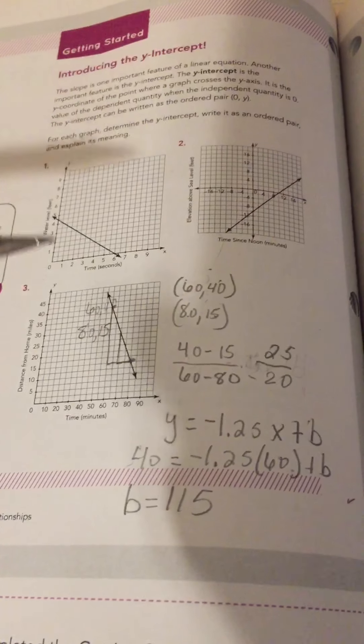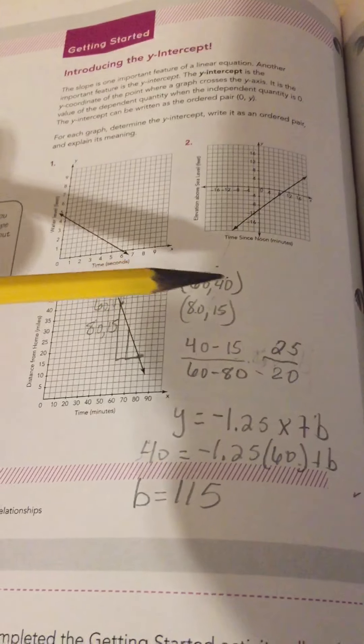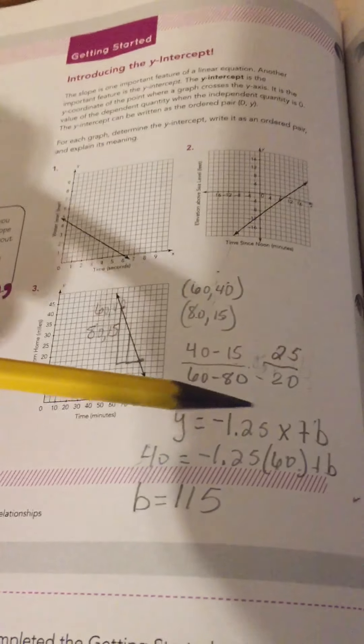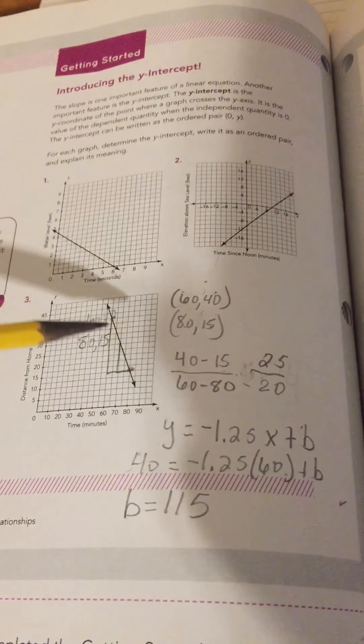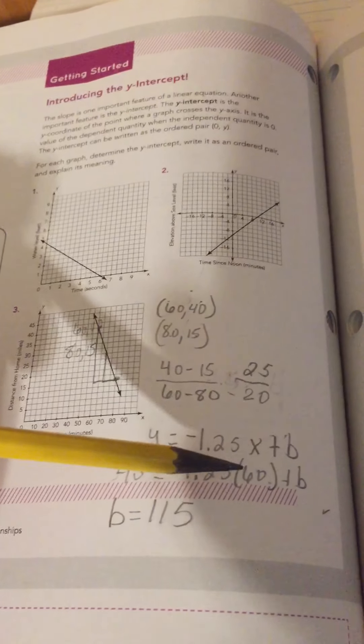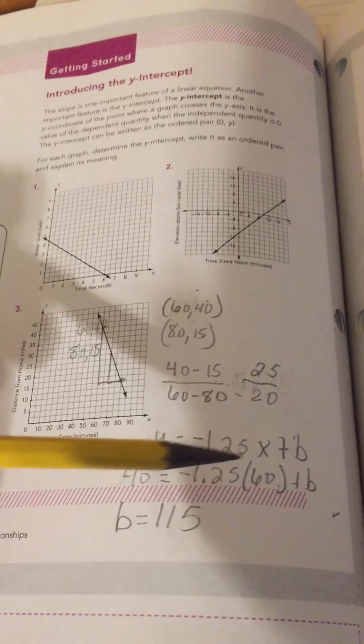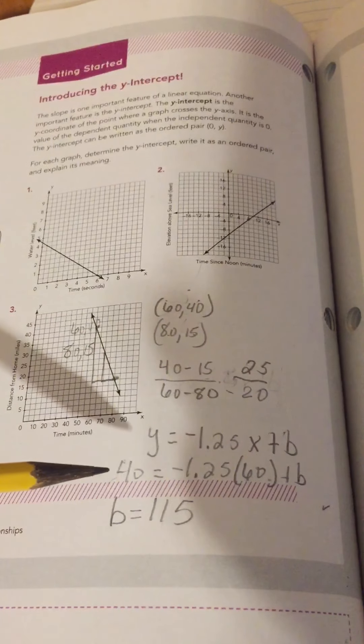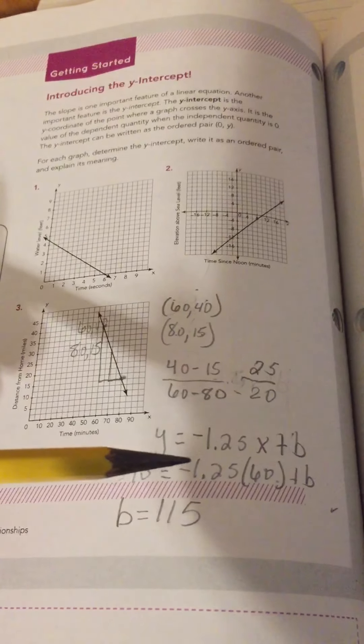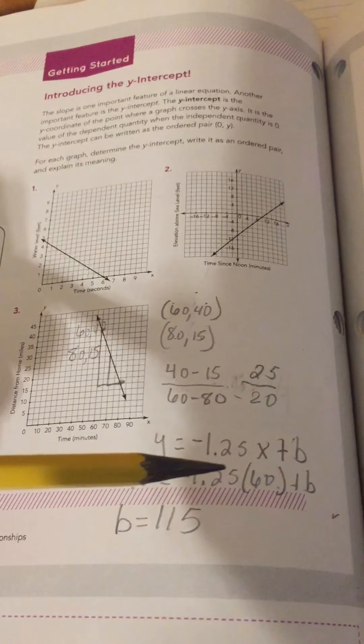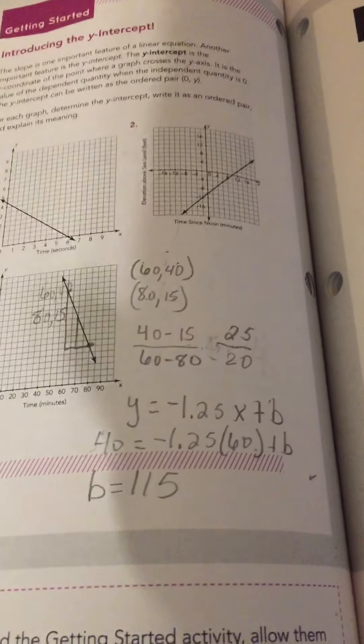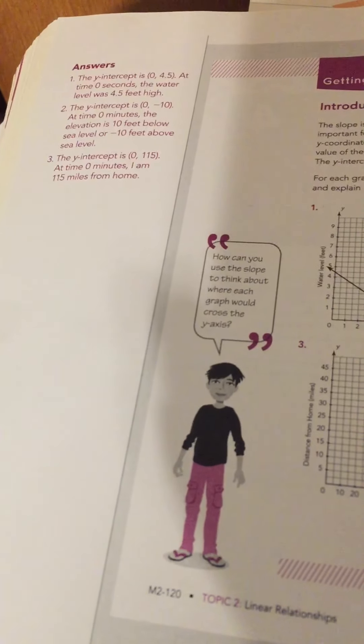So, to recap what I did here, I used these coordinates to find my slope. I plugged my slope into the equation. I then plugged in two coordinates that we know for sure are on the graph and for my x and my y. And then I solved the equation for what the b would have to be in order for this to be a true math statement. So, then I could recheck my work and I could say is negative 1.25 times 60 plus 115, 40 and is in fact true. And we have over here that our y-intercept is 0, 115.